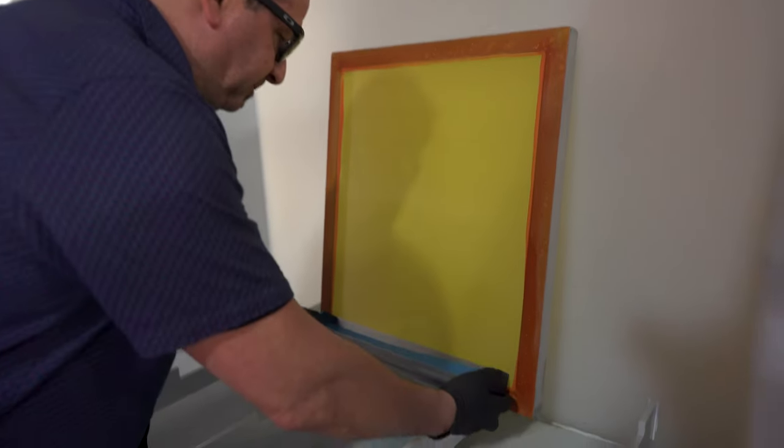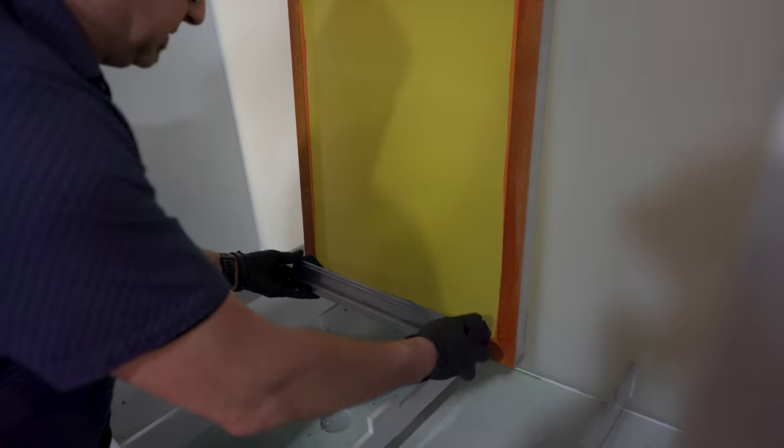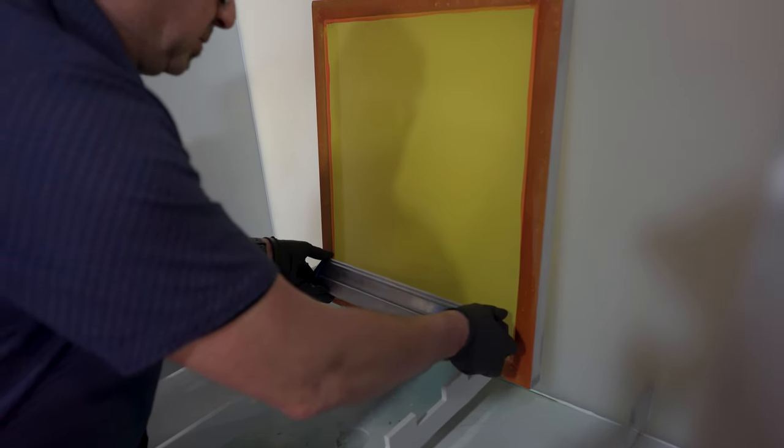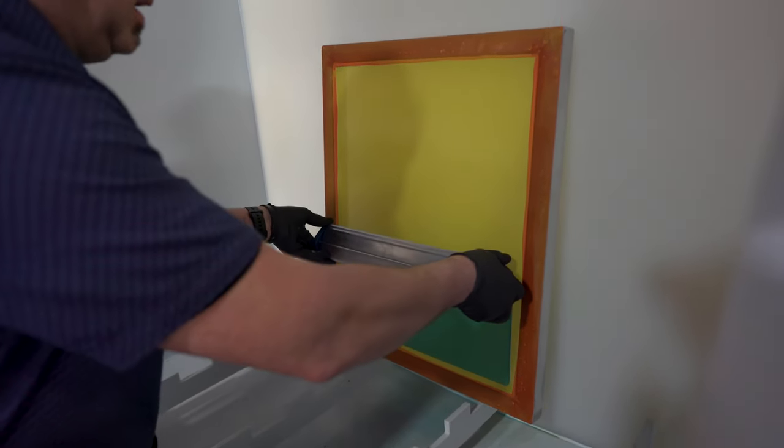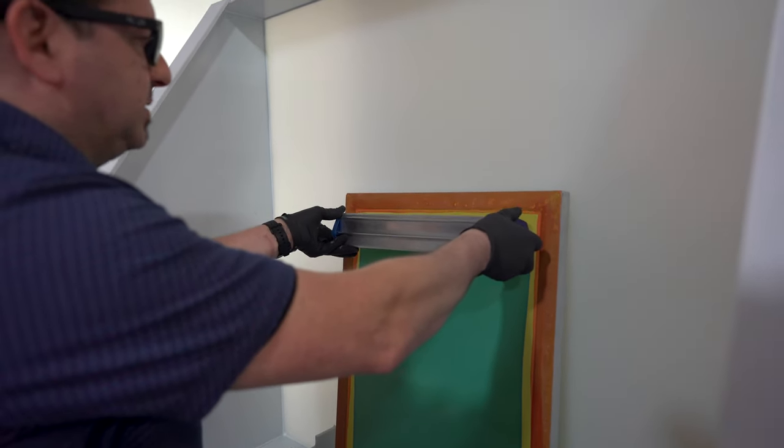We're going to start at the bottom. We're going to let our emulsion flow onto the screen, make our positive contact, then an even slow stroke, and go ahead and coat the back of the screen.